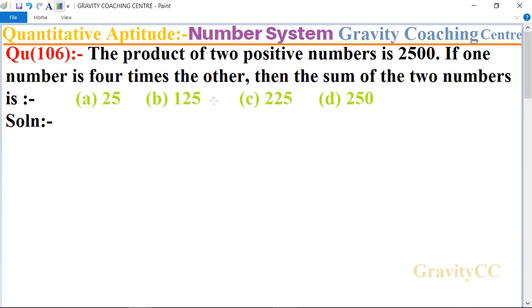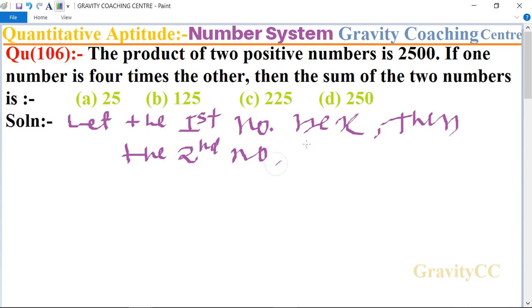First of all, let the two numbers be... let the first number be x. Then the second number be 4x, since one is four times the other. According to the question, the product of the two numbers...